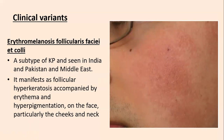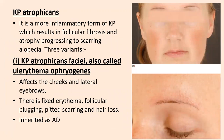Clinical variants of keratosis pilaris: the first and most common is erythromelanosis follicularis faciei et colli, a subtype of KP seen in India, Pakistan, and the Middle East. It manifests as follicular hyperkeratosis accompanied by erythema and hyperpigmentation on the face, particularly the cheek and neck. KP atrophicans is a more inflammatory form of KP resulting in follicular fibrosis and atrophy progressing to scarring alopecia.